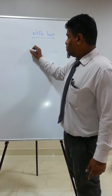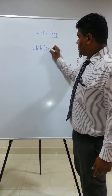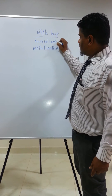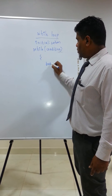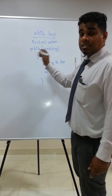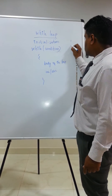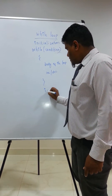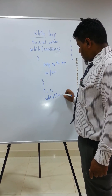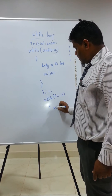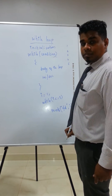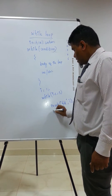While loop is an entry control loop. The syntax would be: initialization before the while; while(condition); then the body of the loop; and inside I can increment or decrement. If I want to print the numbers from 1 to 5, I write: i = 1; while(i <= 5); printf(%d, i); then I need to increment the value of i one by one, so i++.